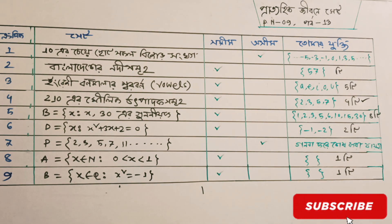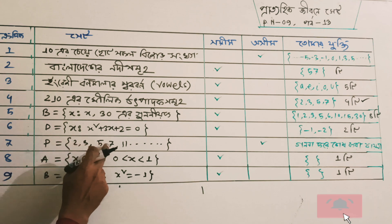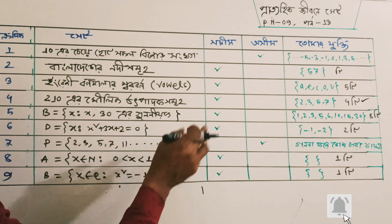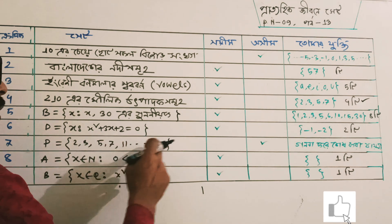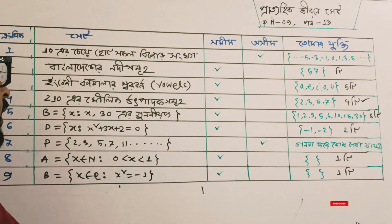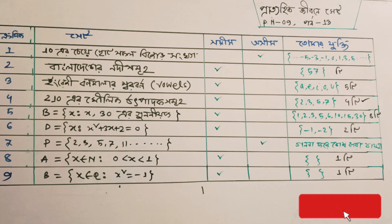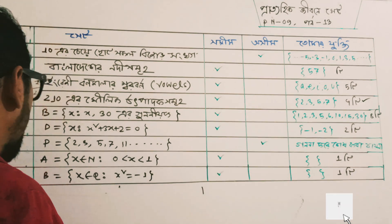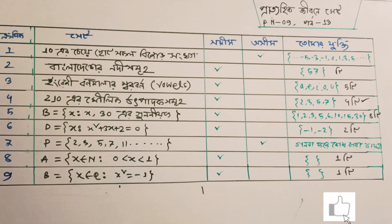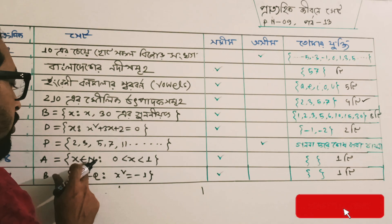Negative P is equal to 2, 3, 5, 7, 1... 2, 3, 5, 7, 1... This is the equity of the sum, which has a set. So this sum is a set of sums. The sum of the sum is equal to n.